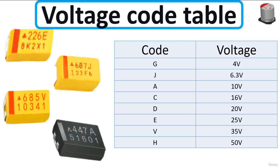With the same working principle, you use the same table, where we have capacitance values and voltage. For example, 226 A — 226 means microfarads and A means 25 volts. For this capacitor, 687 microfarads J — J means 6.3 volts. And for 685 V, V means 35 volts, so the characteristics are 685 microfarads and 35 volts.